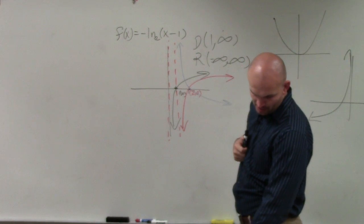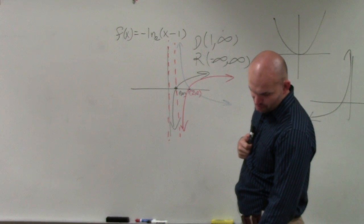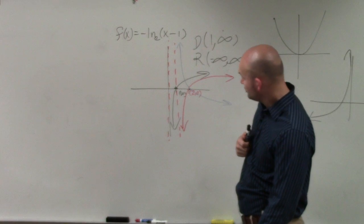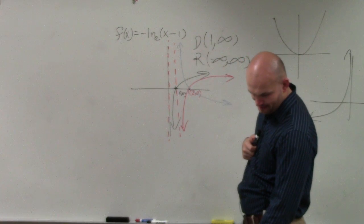Boundedness. This graph is not bounded at all. Extrema. There is no extrema. Symmetry. It is not symmetrical about anything.